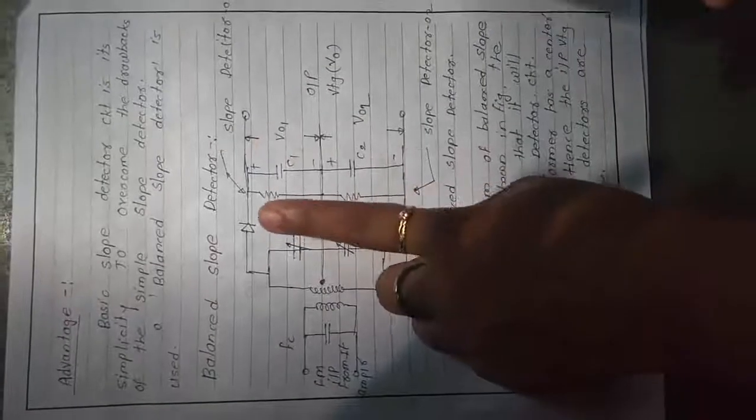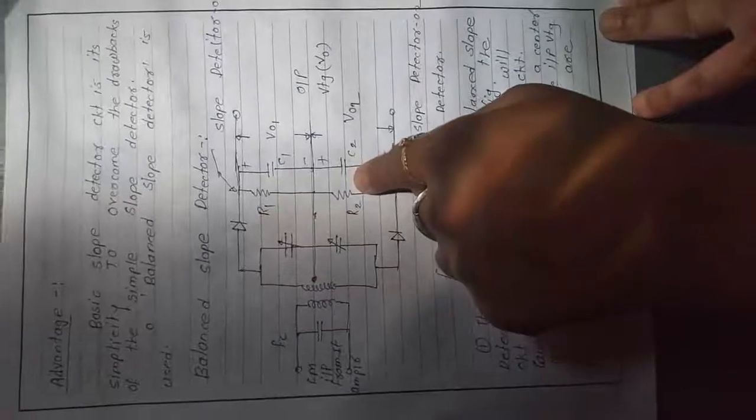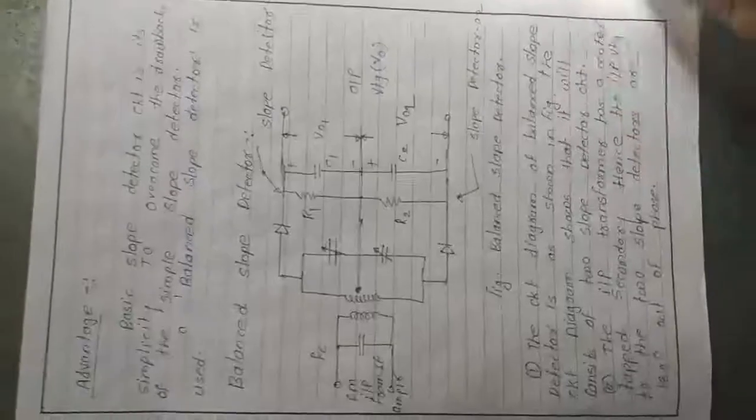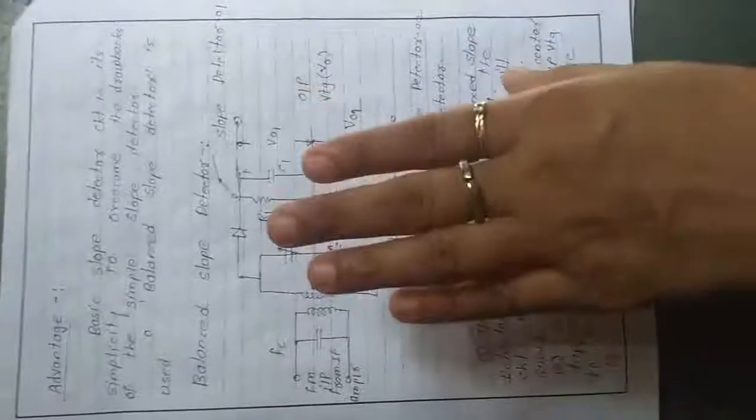These two detectors are combined together using a center tap transformer — that is the key idea behind the balanced slope detector. The combination of simple slope detector 1 and simple slope detector 2 is joined by a center tap transformer. We are combining them this way because the simple slope detector gives inefficient response and its linear response range is very limited.